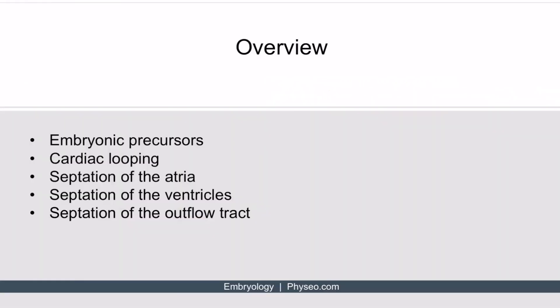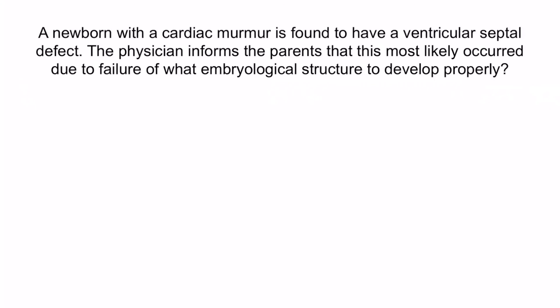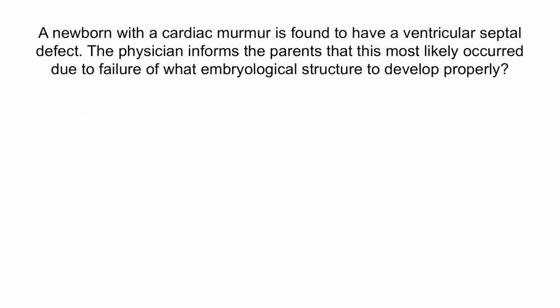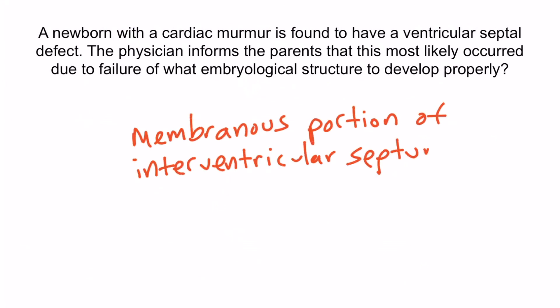Now that we've covered the information, let's review with a question. A newborn with a cardiac murmur is found to have a ventricular septal defect. The physician informs the parents that this most likely occurred due to failure of what embryological structure to develop properly? A VSD is most commonly due to failure of the membranous portion of the interventricular septum to develop properly. Less frequently, failure of the muscular portion of the interventricular septum can result in a VSD as well. And with that, we've covered everything you need to know regarding normal cardiac development.